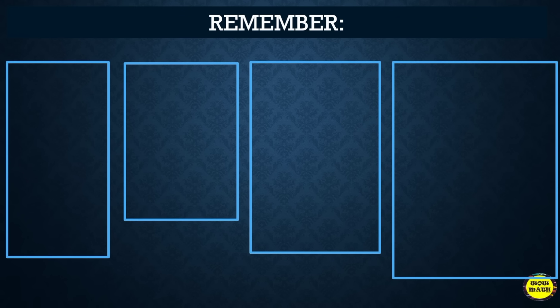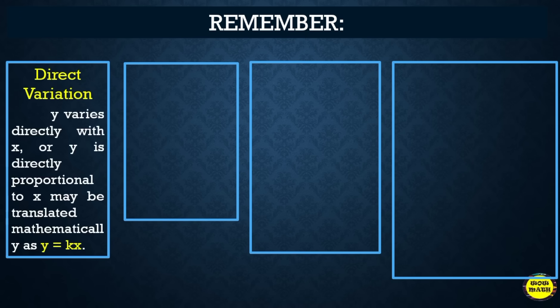Let us recall the first three variations we have discussed: direct, inverse, and joint variation. In direct variation, if y varies directly with x, or y is directly proportional to x, it may be translated mathematically as y = kx.